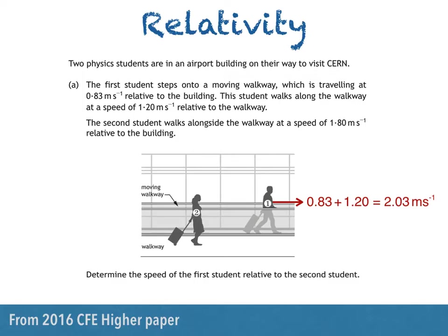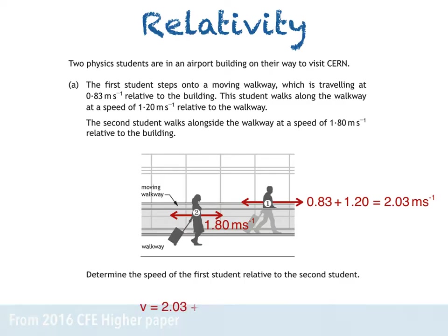Student 2 has a speed relative to the building of 1.8 metres per second. To work out the speed of student 1 relative to student 2, we have to imagine that student 2 is stationary. To do that, we'd have to add a velocity of 1.8 metres per second to the left to student 2, and we'd also have to add that same velocity to student 1. Taking right as positive, the speed of the first student relative to the second student is 2.03 plus negative 1.8, which is 0.23 metres per second. Since we're asked for speed and not velocity, we don't need to give a direction.